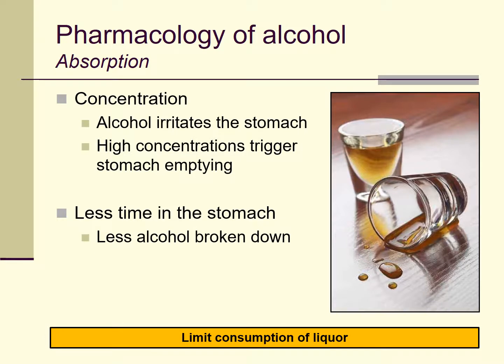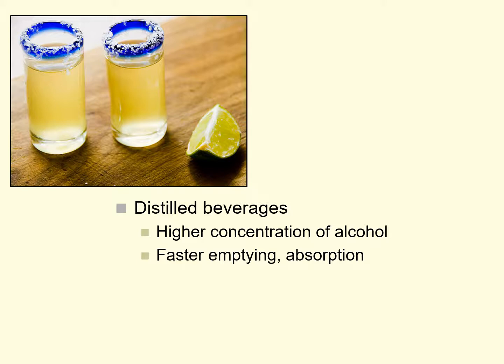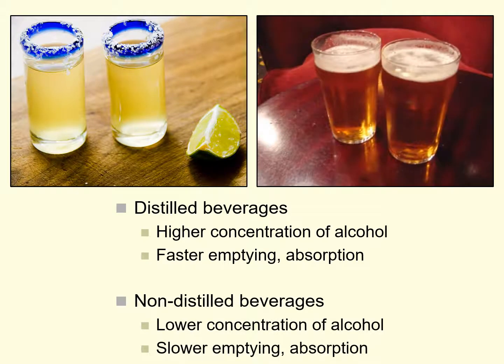If you're drinking alcoholic beverages, it's probably best to limit your consumption of liquor. Drinking liquor especially not mixed with anything, especially on an empty stomach, can lead to irritation and can cause you to get drunker faster than you might want. To summarize: distilled beverages — whiskeys, rum, vodka — have a higher concentration of alcohol, leading to faster stomach emptying and faster absorption into the bloodstream. Non-distilled beverages like beer and wine have a lower concentration of alcohol by volume, slower emptying, and slower absorption. Different factors in beverages affect the pharmacokinetics — how quickly the alcohol absorbs into your system.